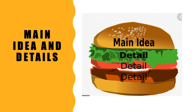Let's think of the main idea and details as a sandwich — a nice cheeseburger. The main idea is the bun, the bread that holds all the ingredients together. It is the main information or the main topic that the reading is talking about, while the details are all the little things that give you more information and make the reading interesting.